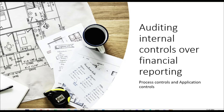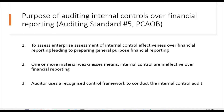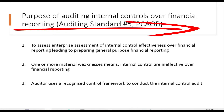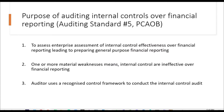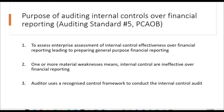Auditing Internal Controls for Financial Reporting focuses on Process Controls and Application Controls. The purpose of Internal Controls for Financial Reporting is discussed in Auditing Standard No. 5 of PCAOB. It is to assess the enterprise's assessment of Internal Controls effectiveness for Financial Reporting, leading to preparing General Purpose Financial Reports for stakeholders. One or more material weaknesses in Internal Controls means they are ineffective for Financial Reporting. The auditor uses a Recognized Control Framework to conduct the Internal Control Audit.